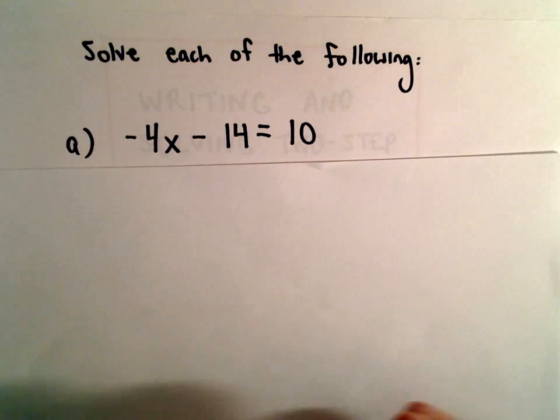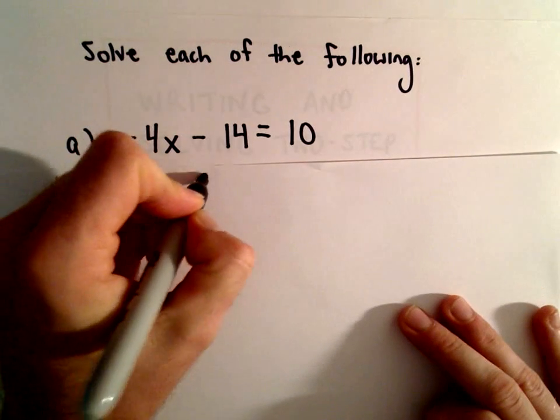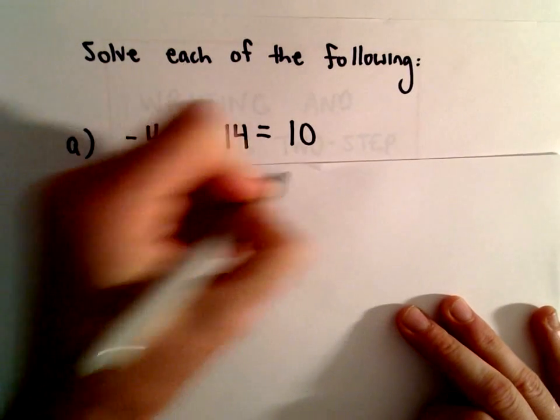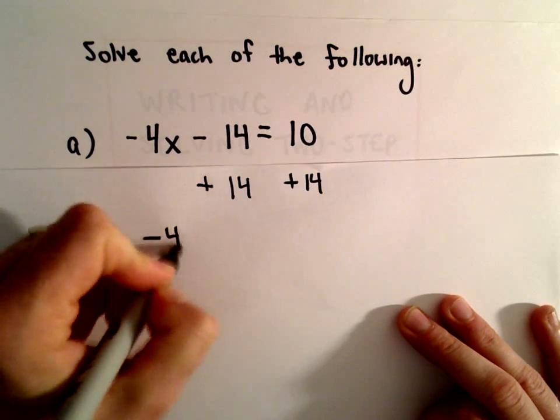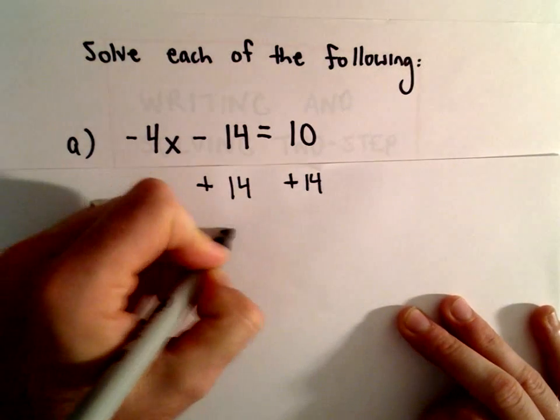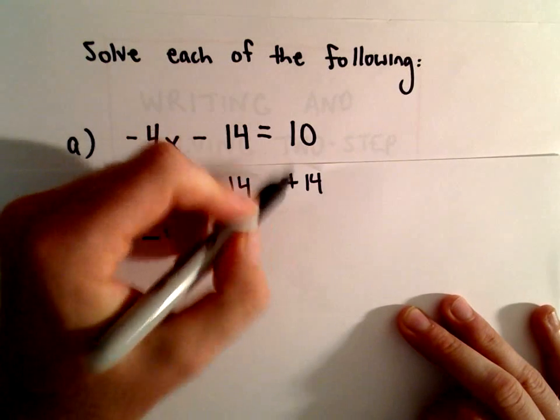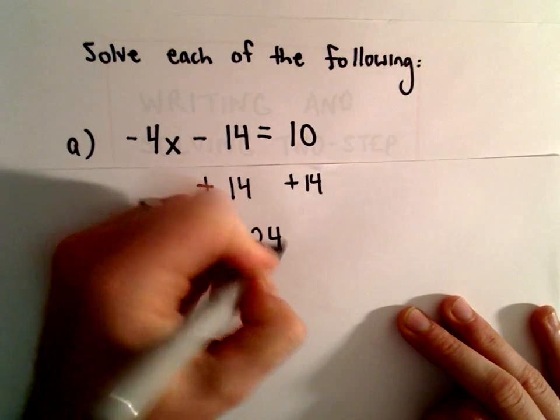So to get the x's basically by itself, since I'm subtracting 14, I'm going to add 14 to both sides. So on the left side, that's going to leave me with negative 4x equals, well, let's see, 10 plus 14 is going to be 24.